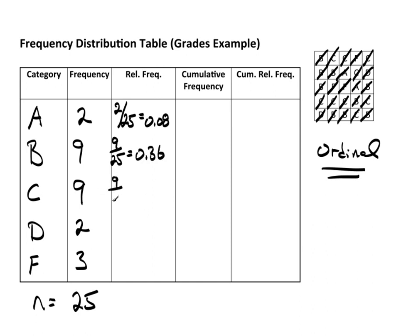Likewise for the C's. That's, again, thirty-six percent. The D's, two out of twenty-five, which I already know is eight percent. And the F's are three out of twenty-five, which is twelve percent.